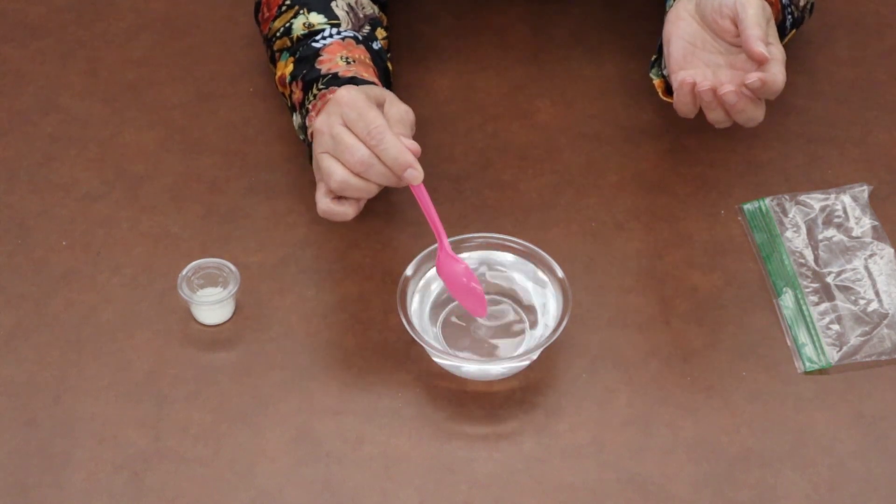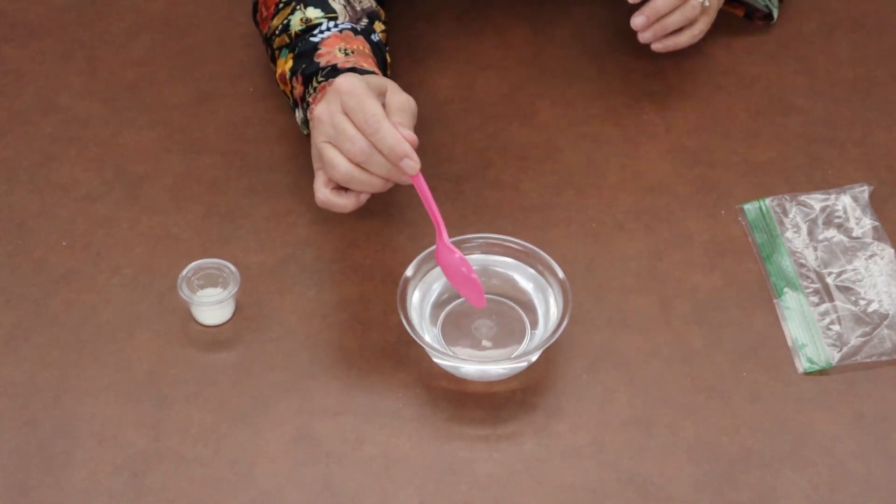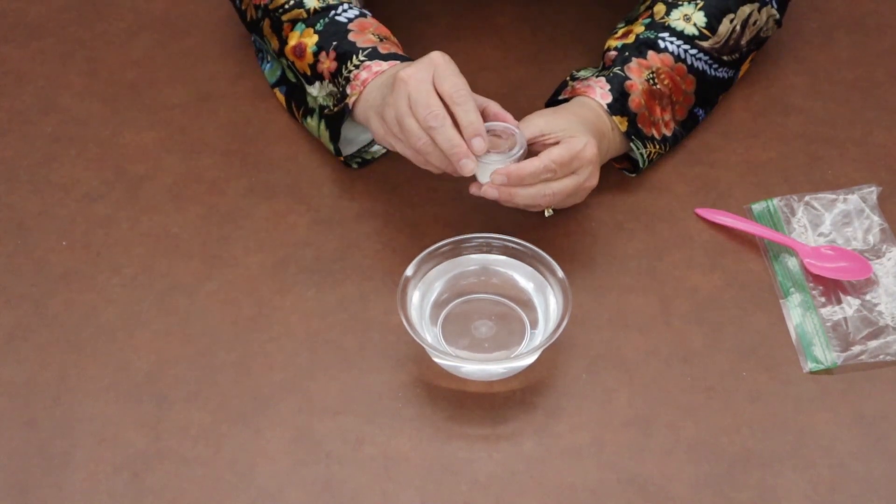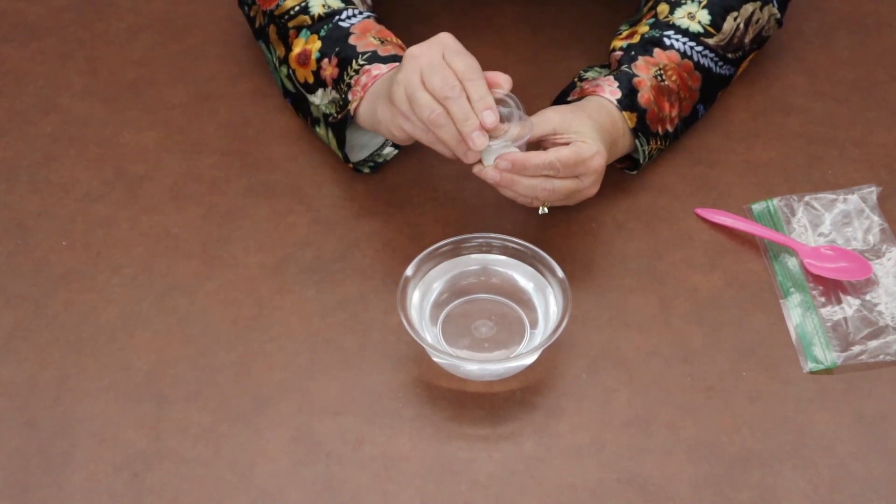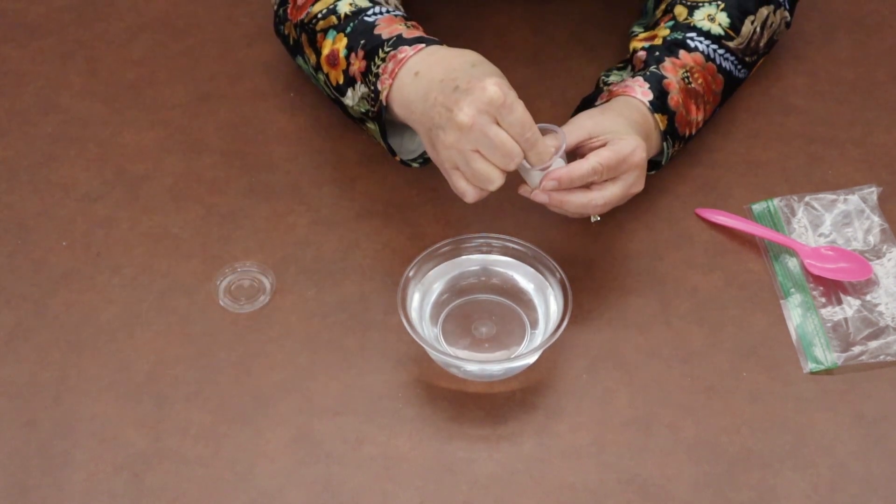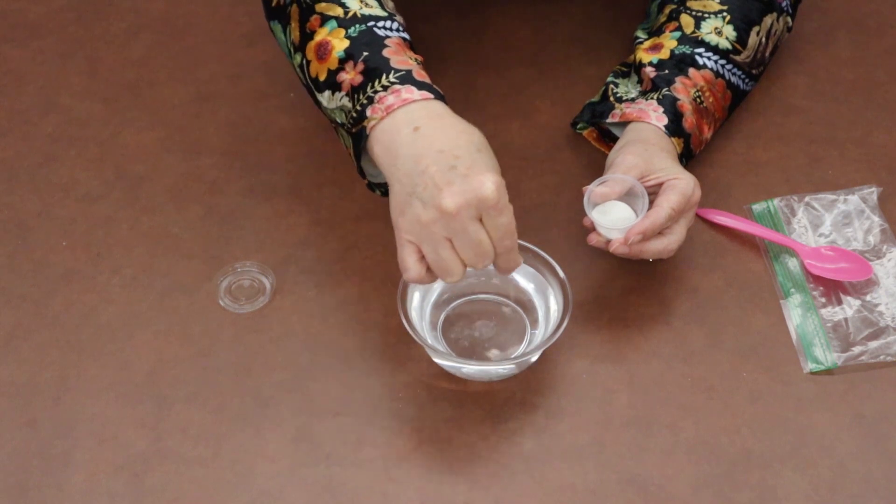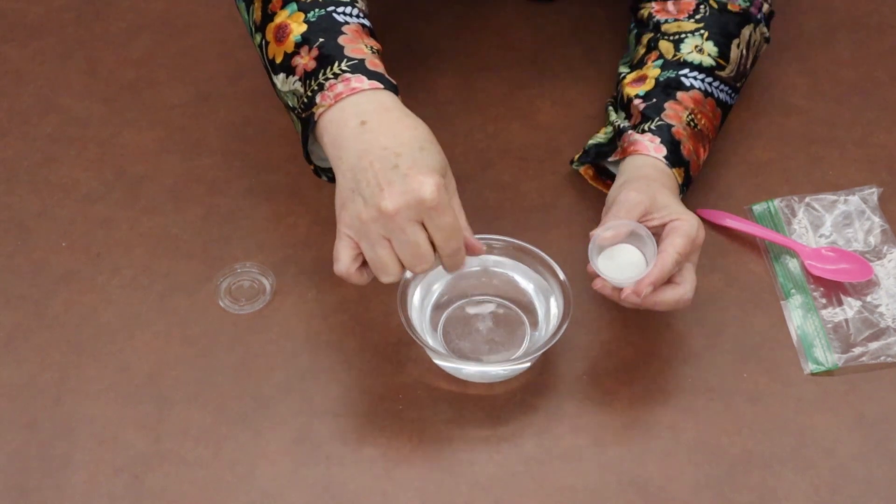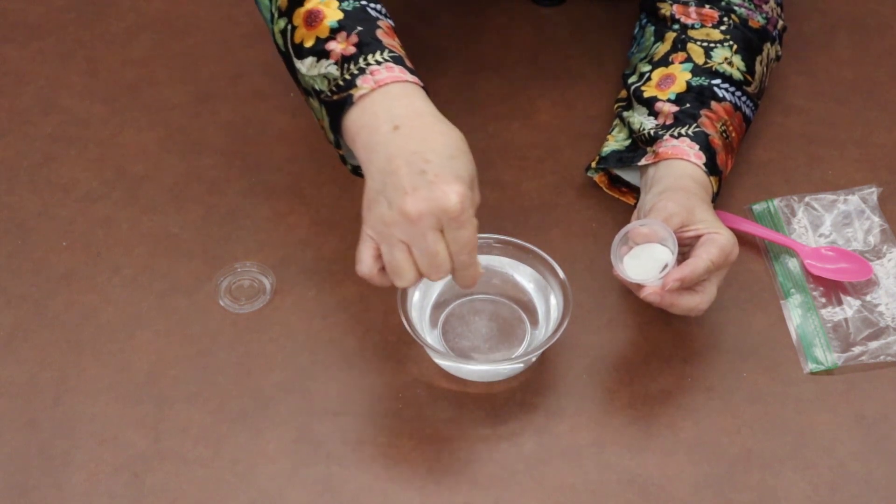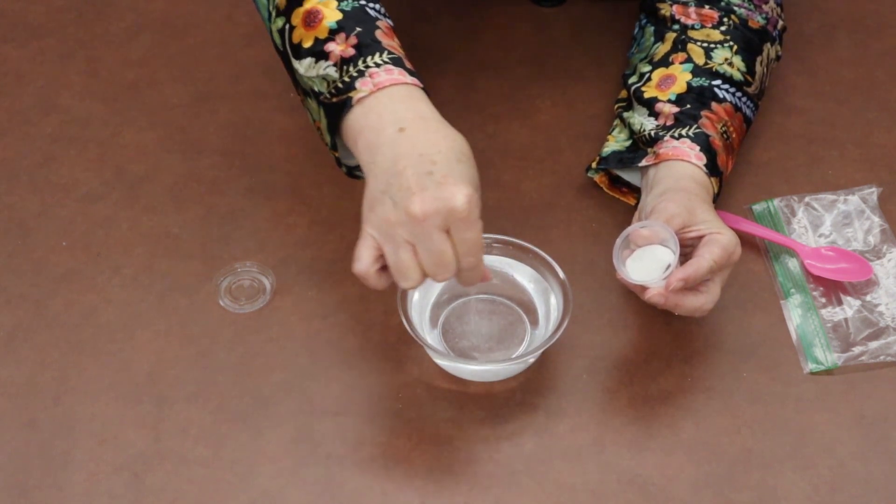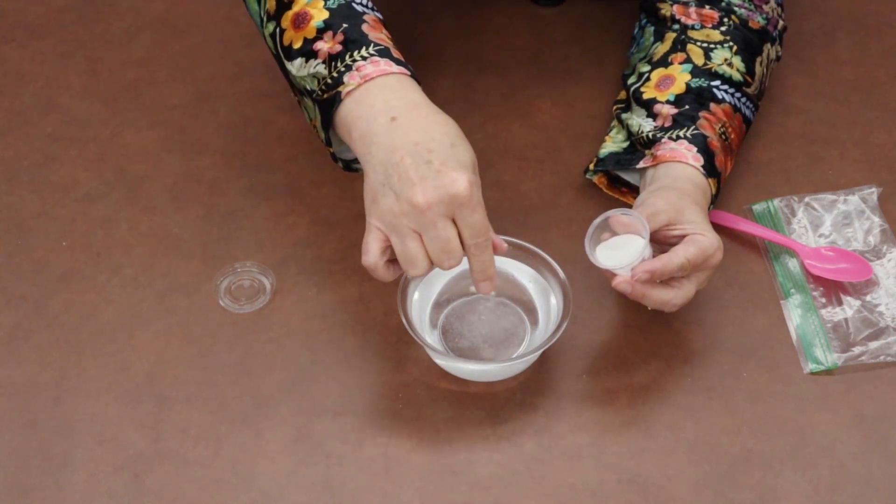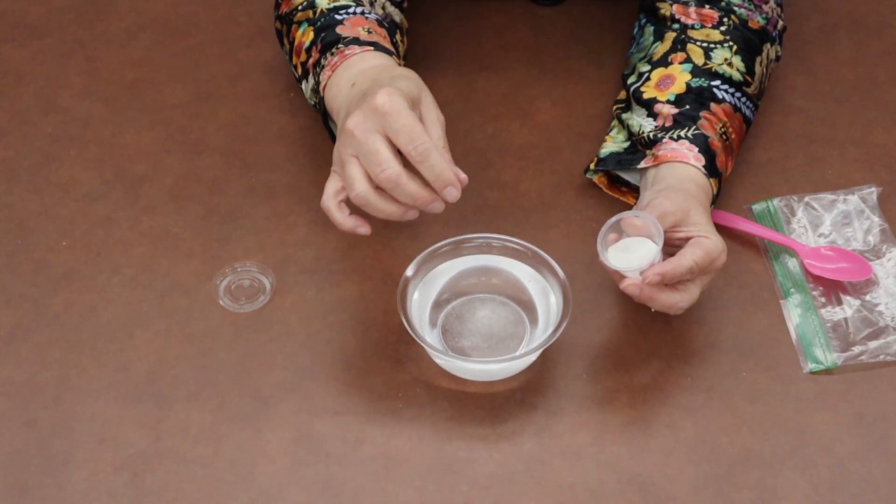You would add the food color in and stir if you choose to do it. Then you're going to take the little container of sand and just take a couple pinches and sprinkle it around. I'm just kind of pinching some out and sprinkling it around. That's because the Epsom salt needs a little bit of something to cling to to start growing your crystals, and that's what the sand is in there for.